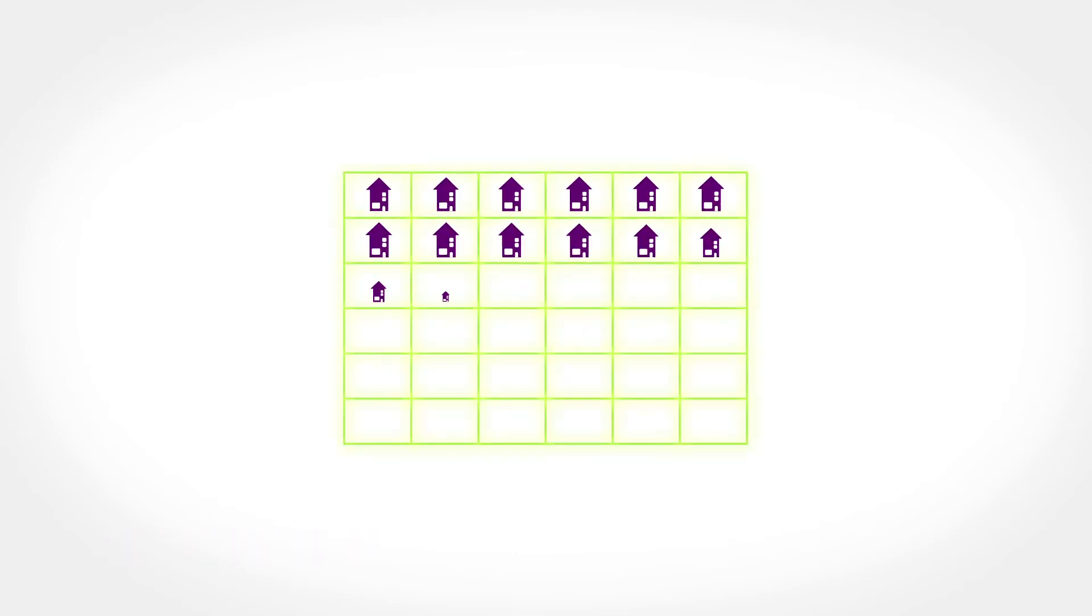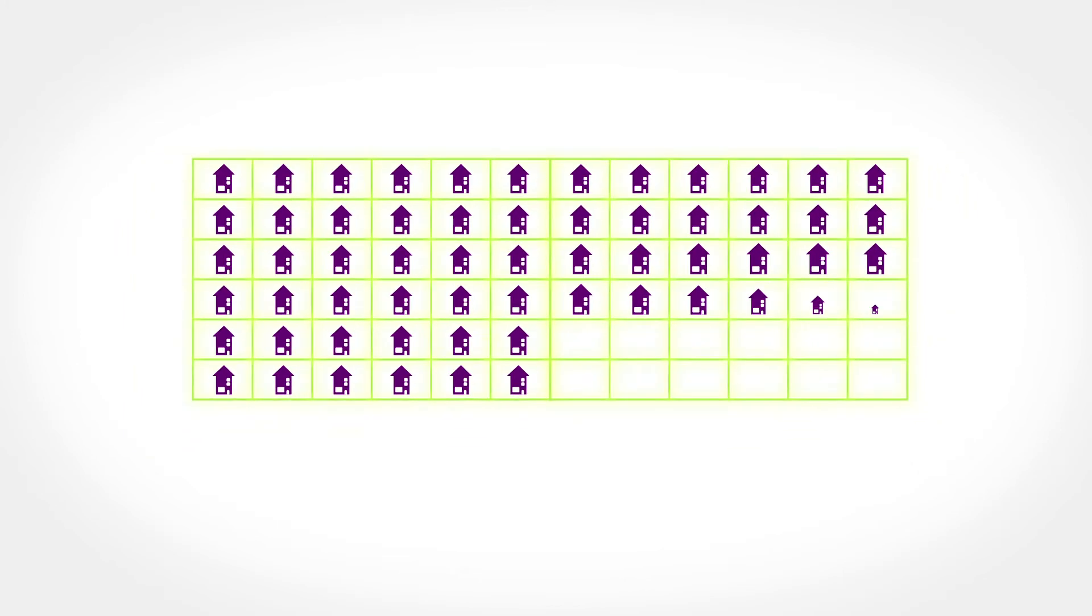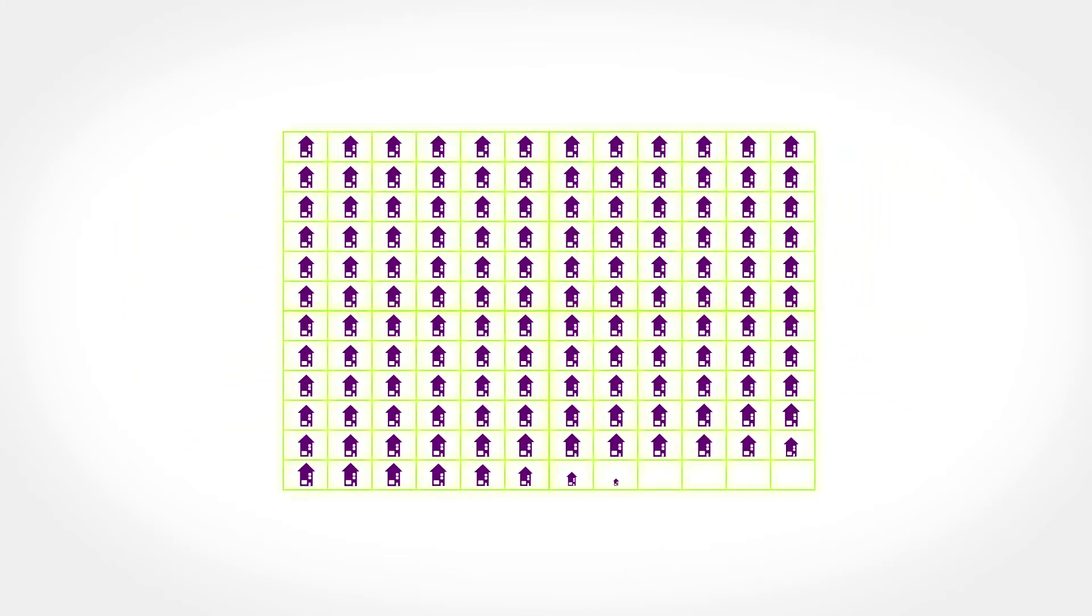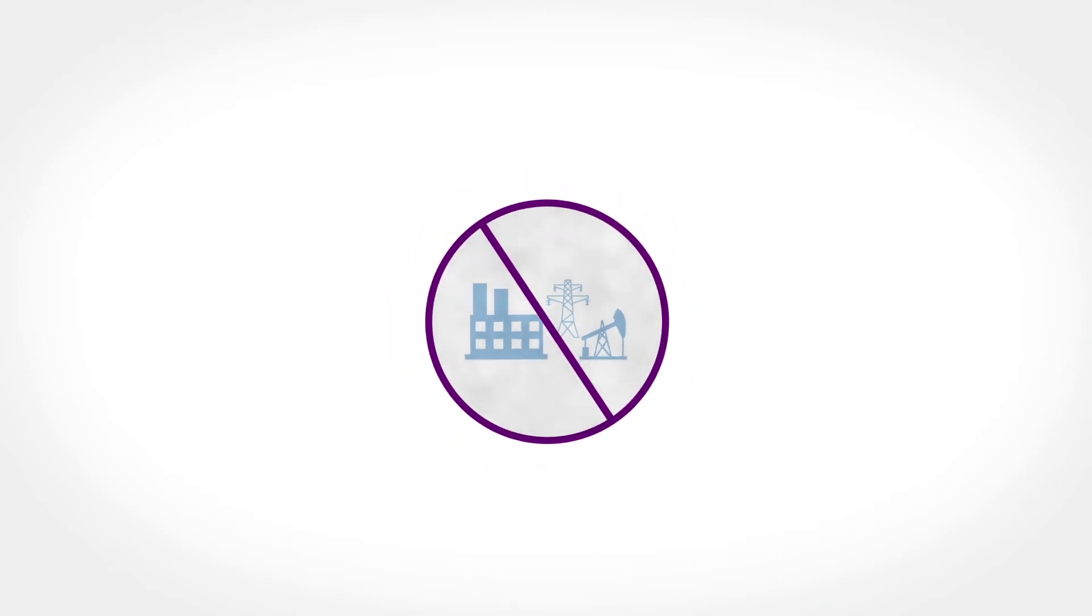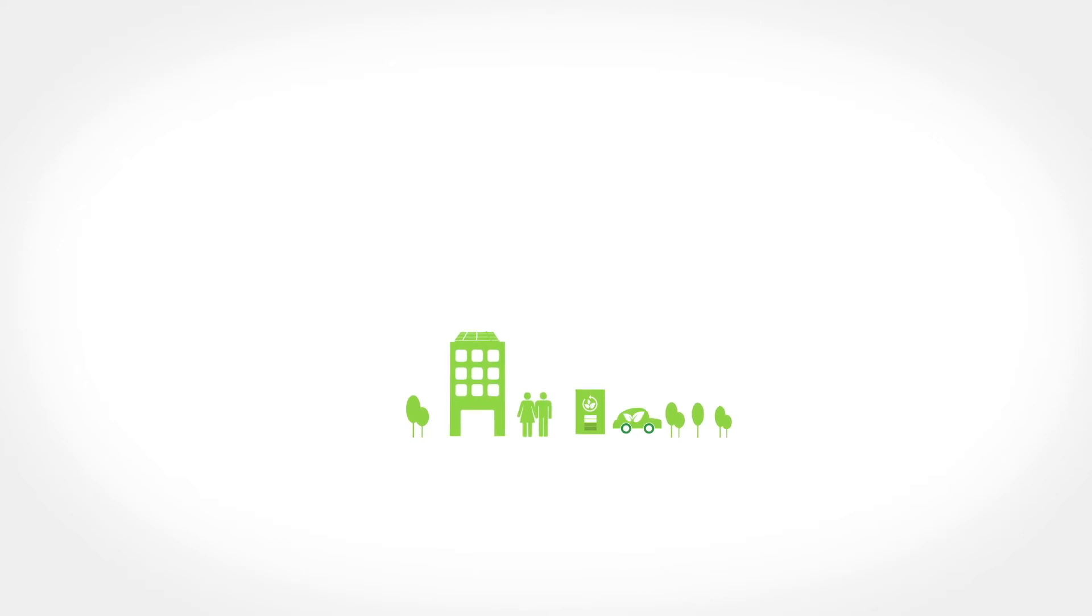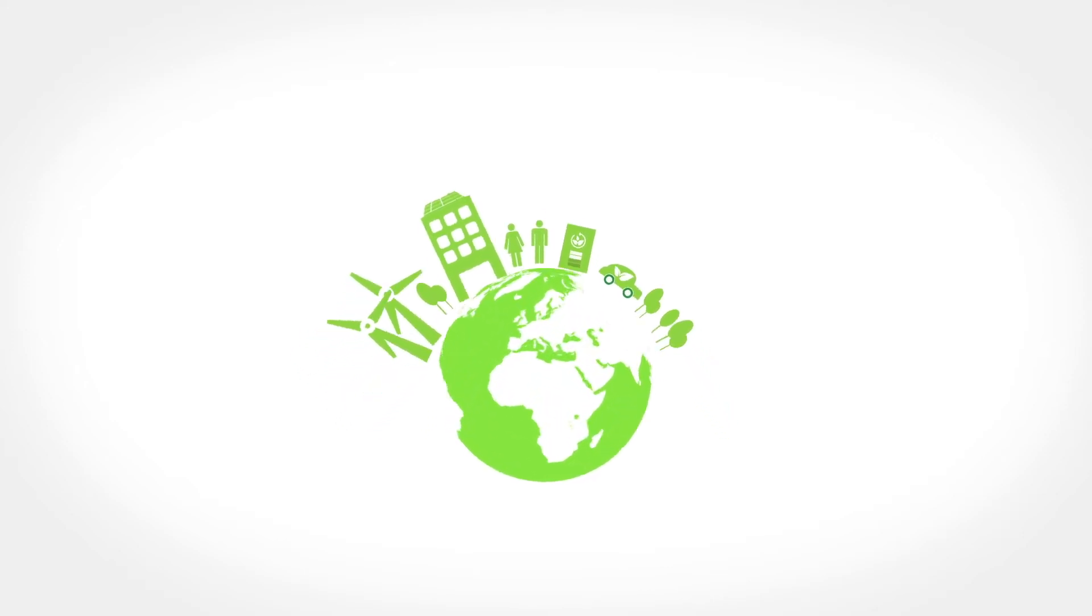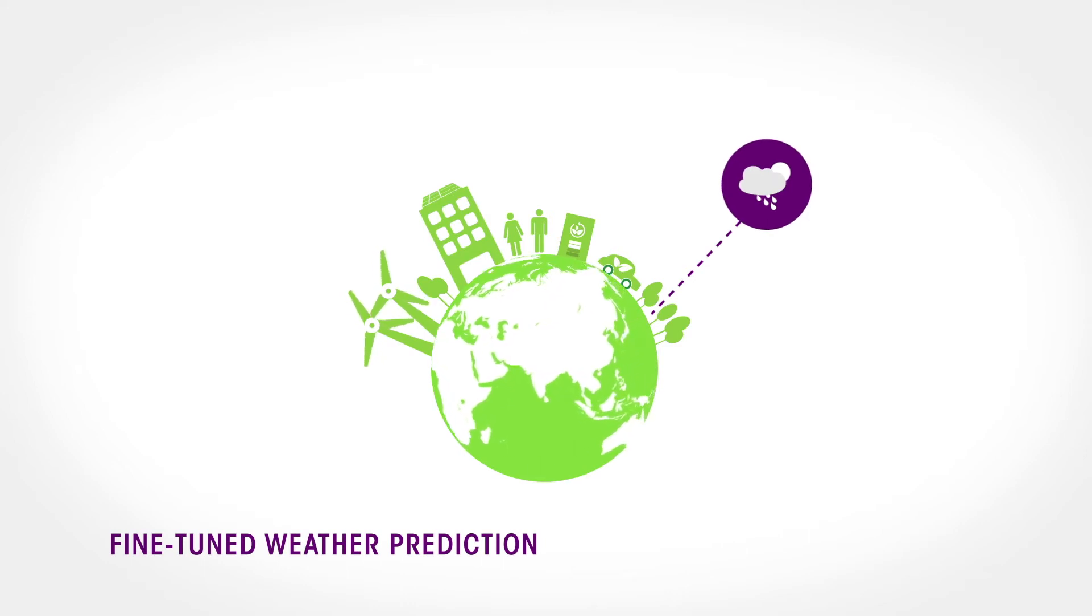This smart grid will balance the production and demand from millions, possibly billions of nodes, to make optimal use of the available renewable sources and to limit the need for traditional electricity plants. And with all the available intelligence, this grid may even provide additional services such as more fine-tuned weather prediction.